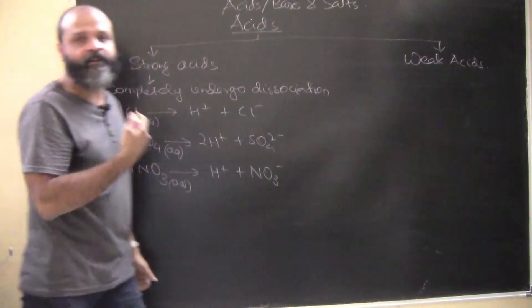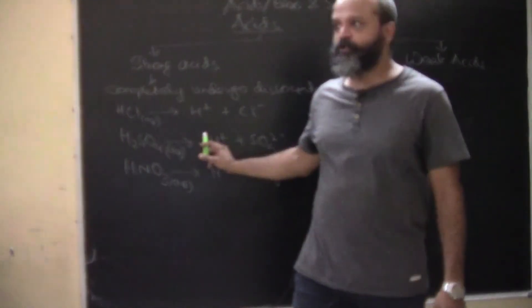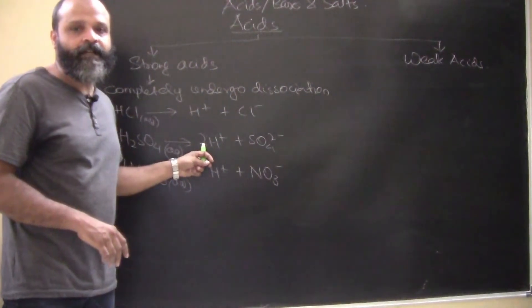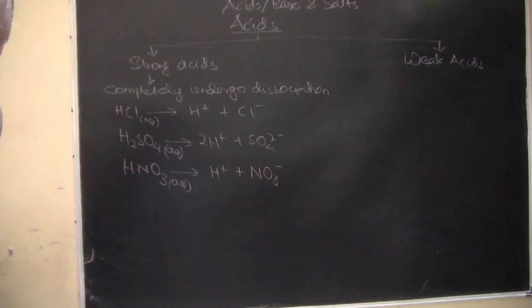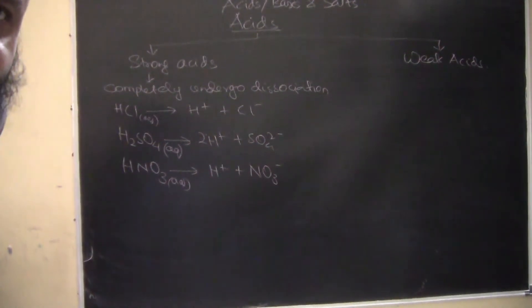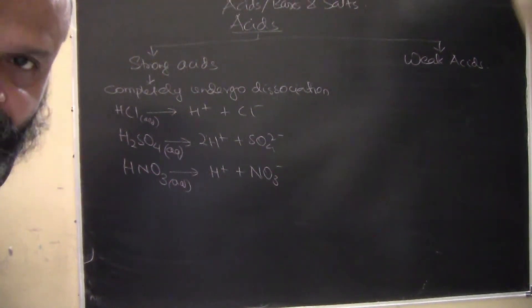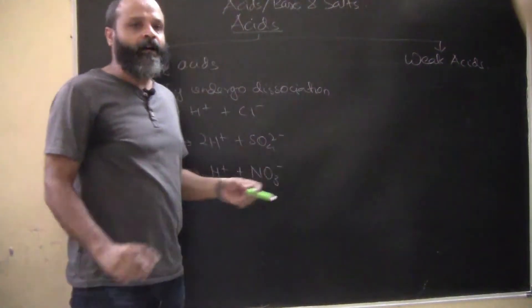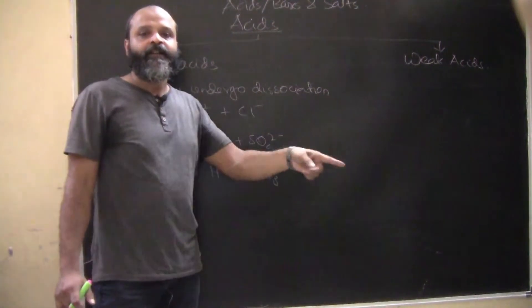Notice there is a single arrow here. A single arrow means the reaction is not reversible - the moment you dissolve them in aqueous solution or in water, they are completely dissociating. There is complete dissociation.